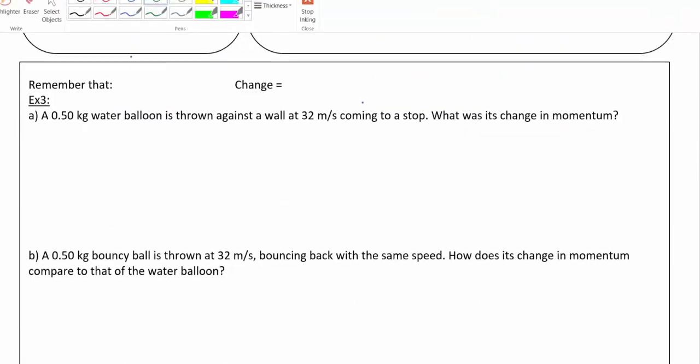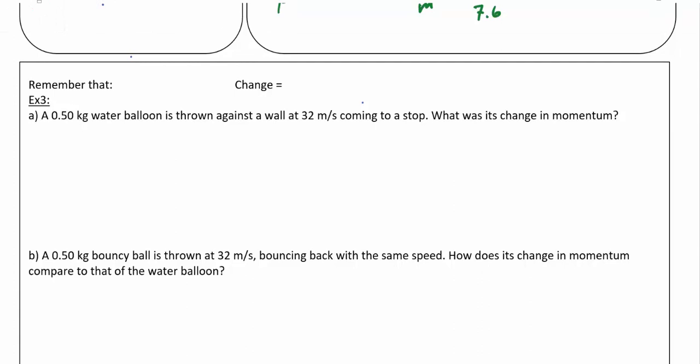Okay, so we're going to talk briefly about changes in momentum. You'll recall that a change in anything is just final minus initial, and the symbol we use for change is delta, that little triangle.